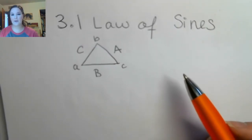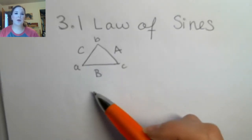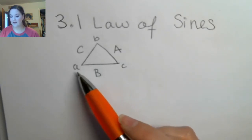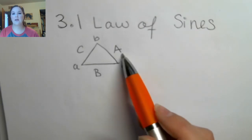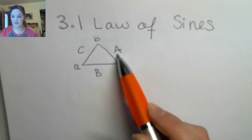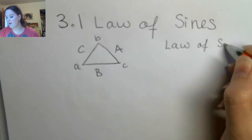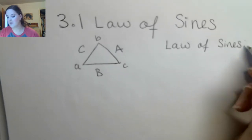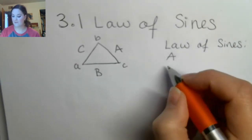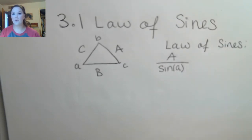Hi everybody, so we're going to talk about the Law of Sines. You can see this setup is any type of triangle — it doesn't have to be a special type, it doesn't have to be a right triangle. The angles are labeled with lowercase letters and the sides that are across from them are labeled with the corresponding uppercase letters. The Law of Sines says that the ratio between the side length and the sine of the corresponding angle is equal for each of these.